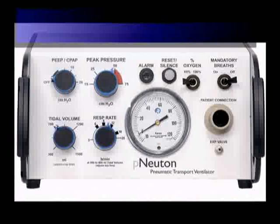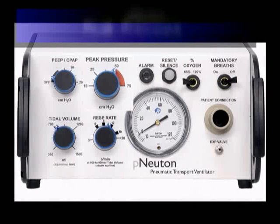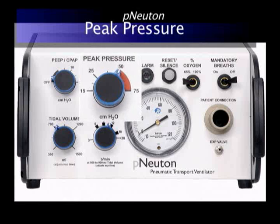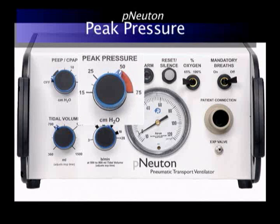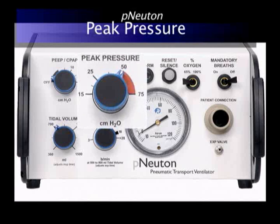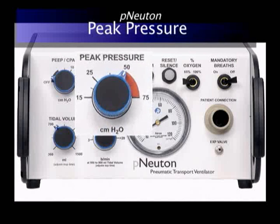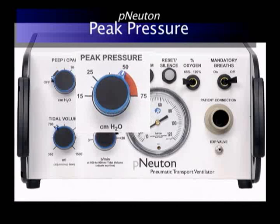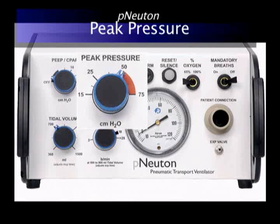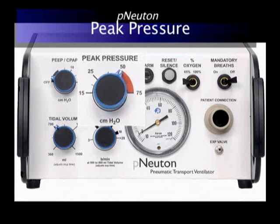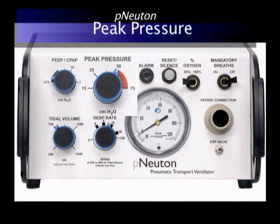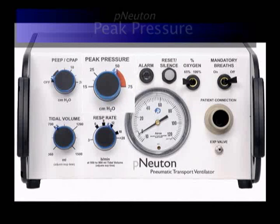This is the peak pressure control. Set above delivered patient pressure, this control limits peak airway pressure to a maximum of 75 centimeters water. Additionally, this control would be used to set delivered peak pressure for pressure-limited breathing mode.